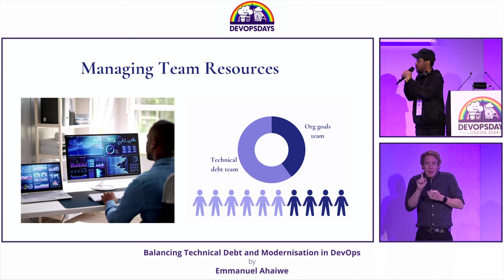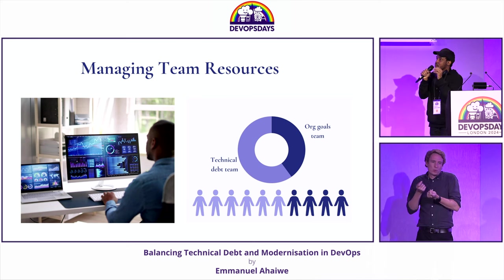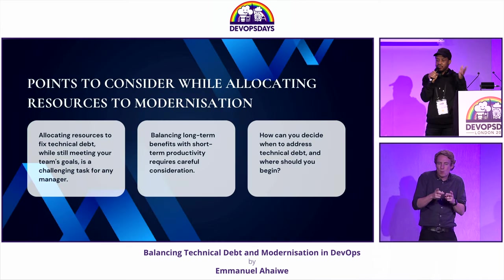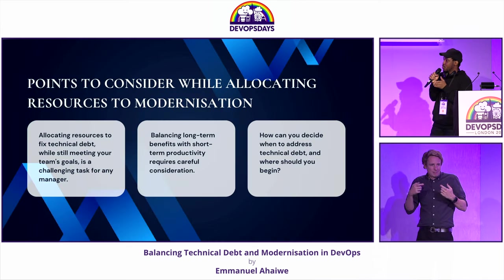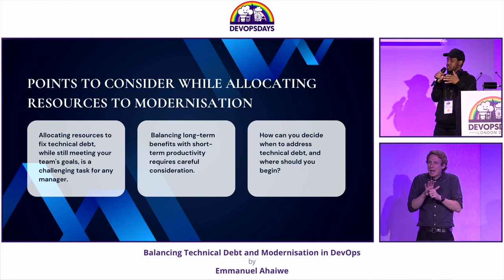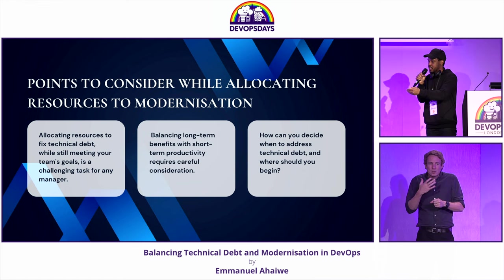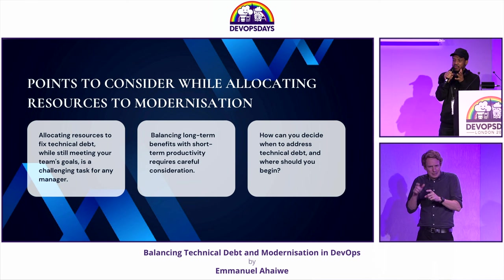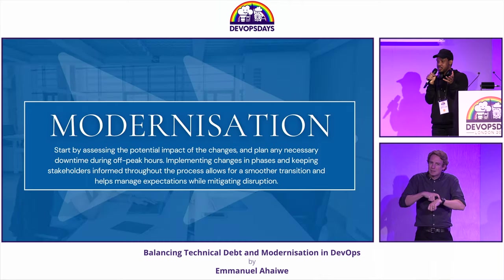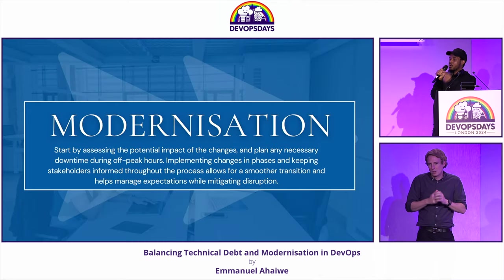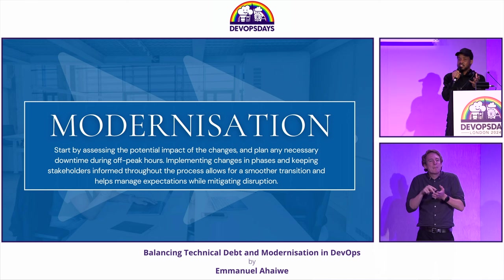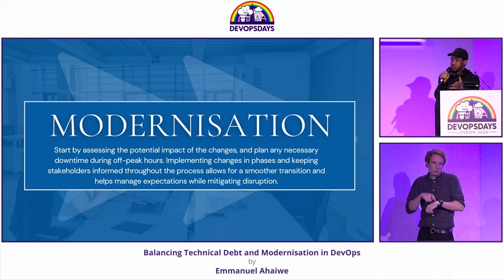Next is managing team resources. You need to be able to align human resources to modernizing while still delivering features, because you want to pay for technical debt and fix security patches. You want to still be able to deliver on your organization's goals. It is very important to consider this while modernizing legacy infrastructure. You need to take into account the potential impact and then plan necessary downtime.